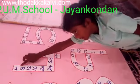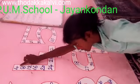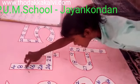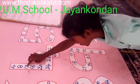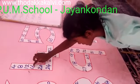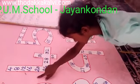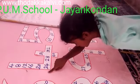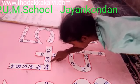Fourth table. 1, 4 is 4. 2, 4's are 8. 3, 4's are 2, 4's are 66. 5, 4's are 20. 6, 4's are 24.